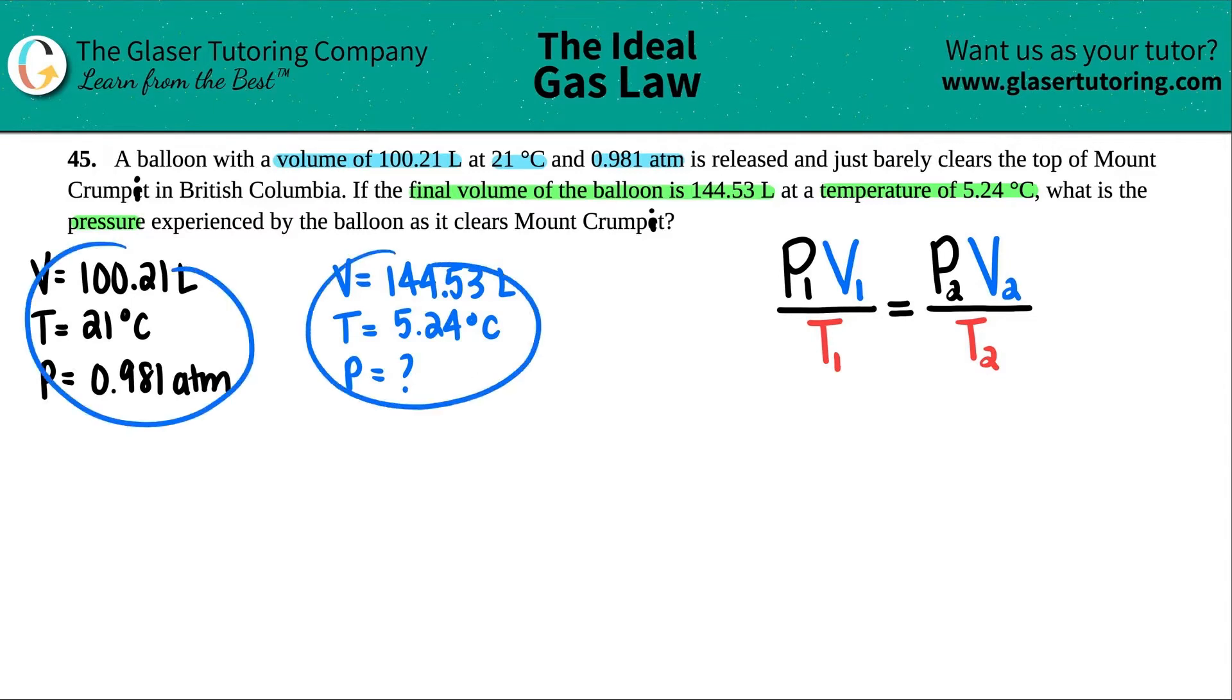The beautiful thing about this formula is get rid of any of the variables that are not stated or that do not change. I didn't see anything that had to do with moles, which is N. So I'm just going to get rid of that. Now we have the other three variables. I have changing volumes, I got changing temps, and I'm searching for that second pressure.